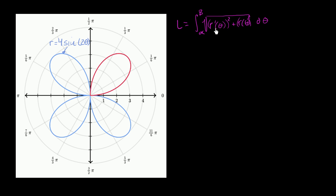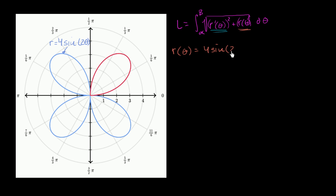Let's figure out what r prime of theta and r of theta actually are. We know r of theta is equal to four sine of two theta. So r prime of theta is going to be: the derivative of two theta with respect to theta is two, times four is eight, and the derivative of sine is cosine — so r prime of theta equals eight cosine of two theta.